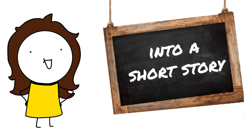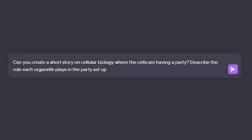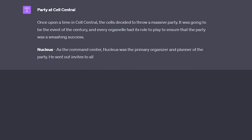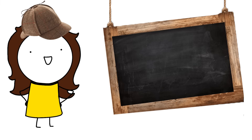Next is a technique called narrative creation, which involves asking ChatGPT to turn information into a short story — the more absurd or humorous, the more likely you are to remember it. For example, if you're trying to remember terms related to cellular biology, you can ask ChatGPT to create a story where cells are having a party and each organelle plays a different role in the party setup. Alternatively, you can simply ask ChatGPT to create a short, memorable, or humorous story on whatever topic you want to learn and let its imagination go wild.